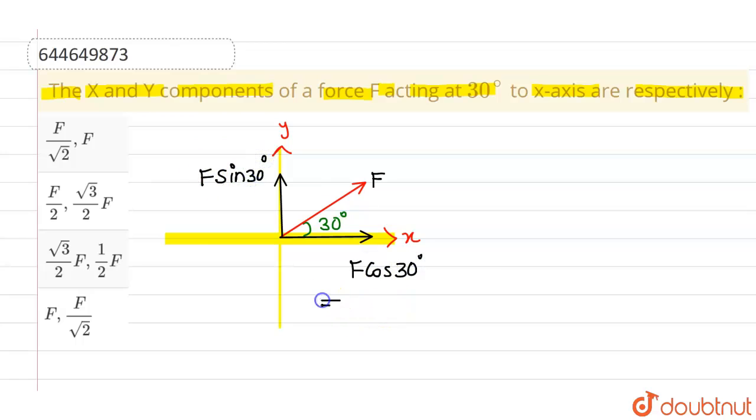Now, if we put the value of cos 30 degree which is nothing but root 3 by 2, so component along x-axis comes out to be f root 3 by 2. So, this is root 3 f by 2. And the component along y-axis is nothing but f by 2 because the value of sin 30 degree is 1 by 2.